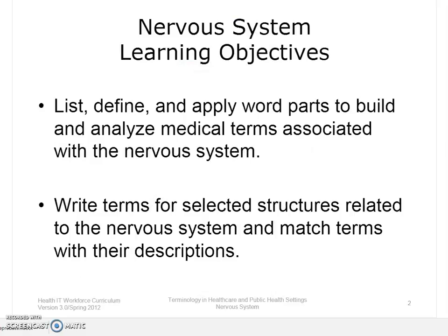The objectives for the nervous system are to list, define, and apply word parts to build and analyze medical terms associated with the nervous system, and to write terms for selected structures related to the nervous system, and to match those terms with their descriptions.